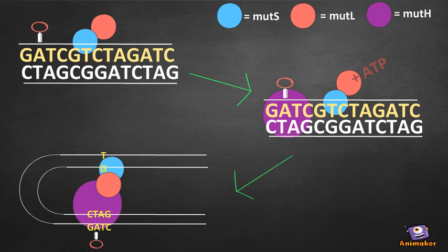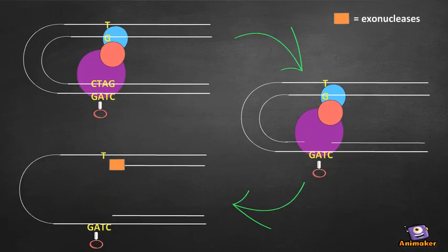MutH is a single-strand endonuclease that binds to the GATC sequence. MutH nicks the unmethylated DNA strand at the GATC sequence. This nicking will only occur if MutH is stimulated by MutL.